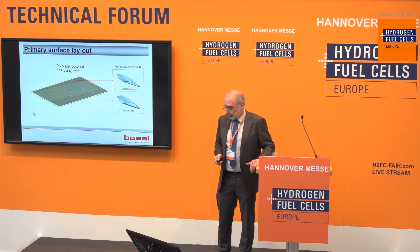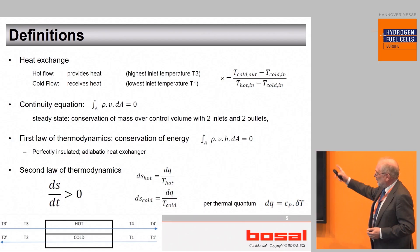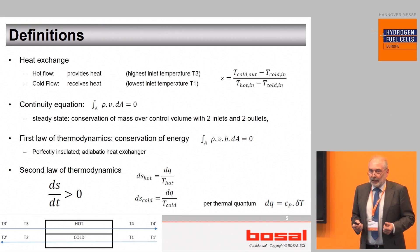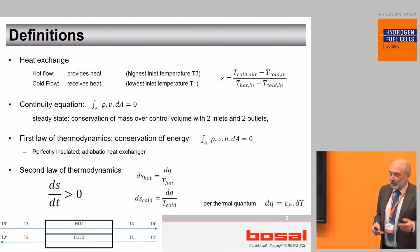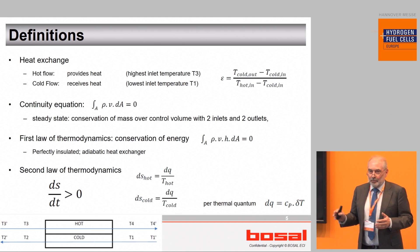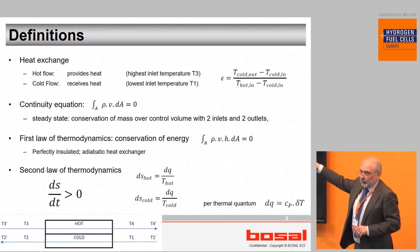Let's start with some definitions. We have a hot flow and a cold flow. The hot flow has the highest temperature, the cold flow the lowest. We define effectiveness with this formula. We have continuity and we are in steady state, which means we have no mass storage in the system — what comes in goes out. Energy: the same energy that goes in has to go out. We consider it as an adiabatic system, so perfectly insulated, so what leaves the hot flow has to appear in the cold flow.